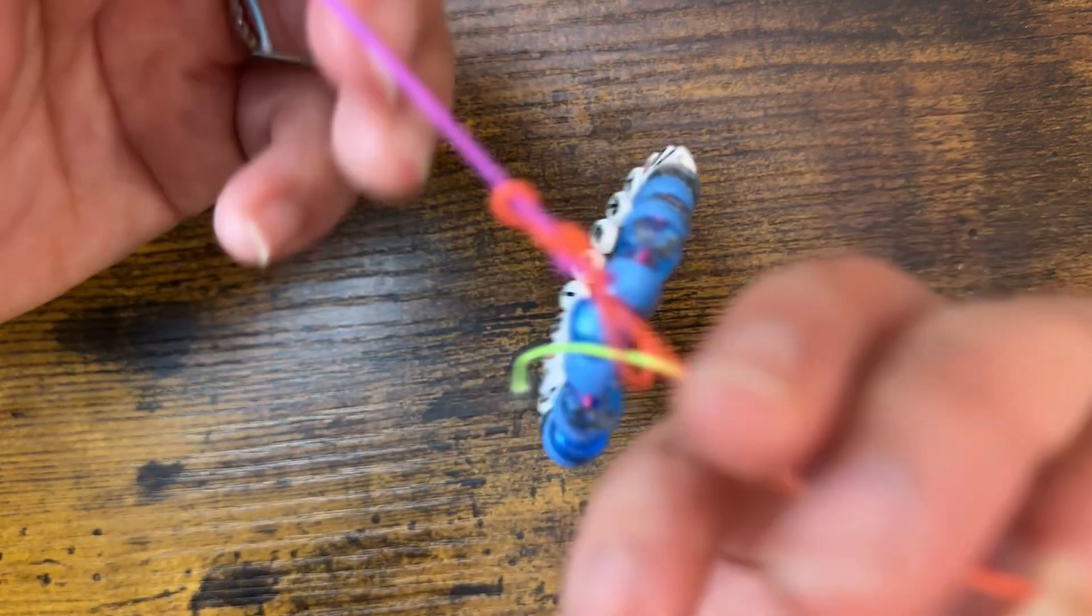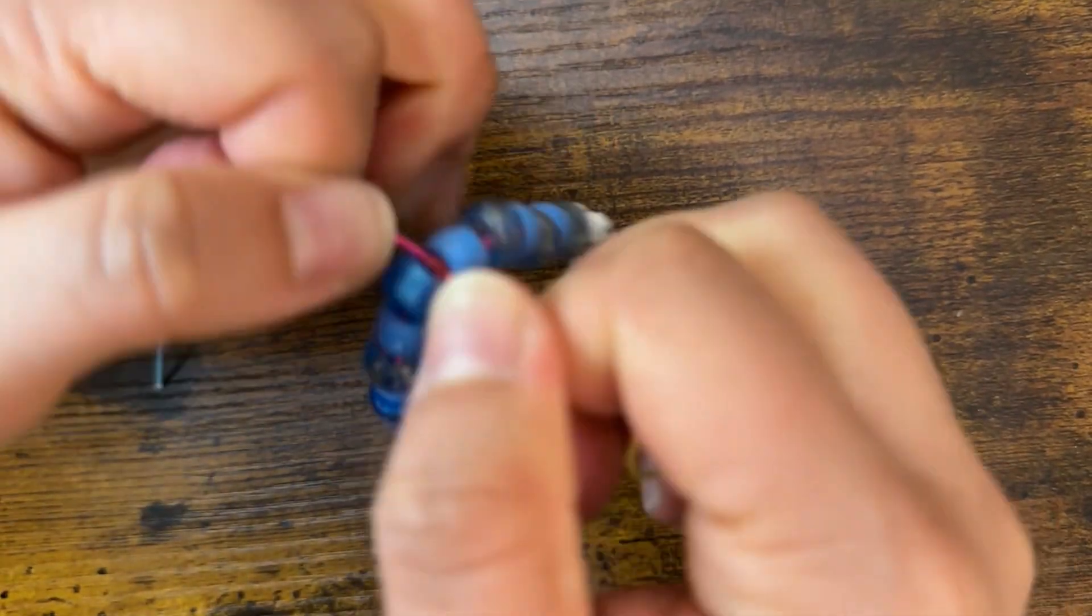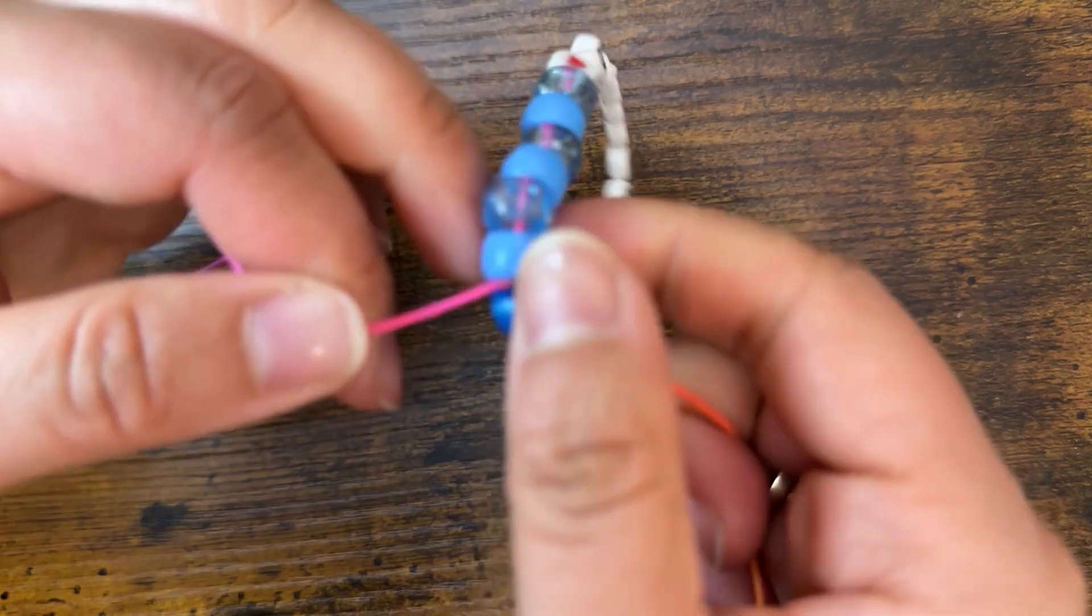You're going to tie it and stretch it really tight until this little knot—you can see here, I want to break it—it's just really tight, because the last thing you want to do is have this break.